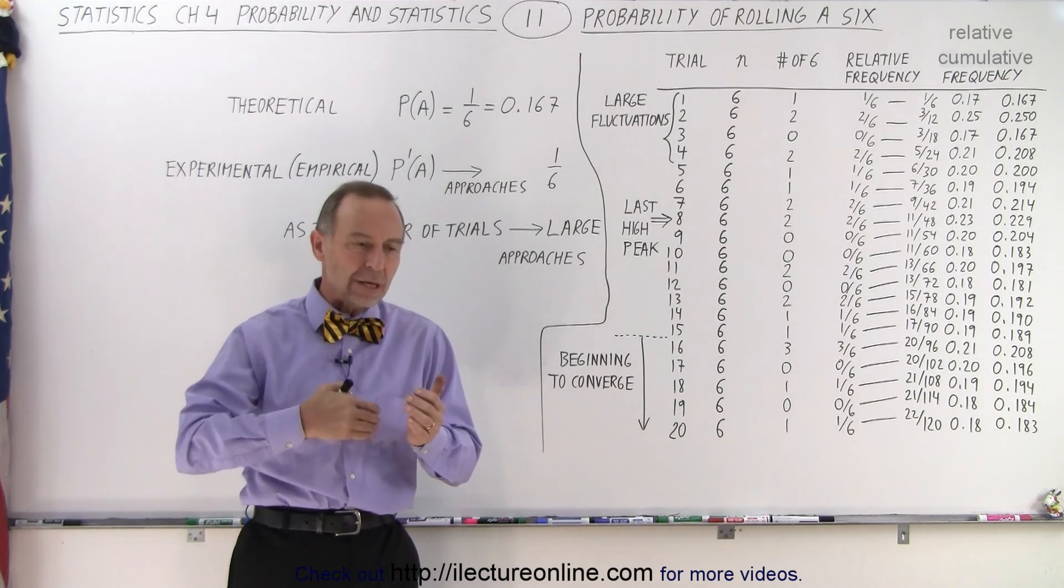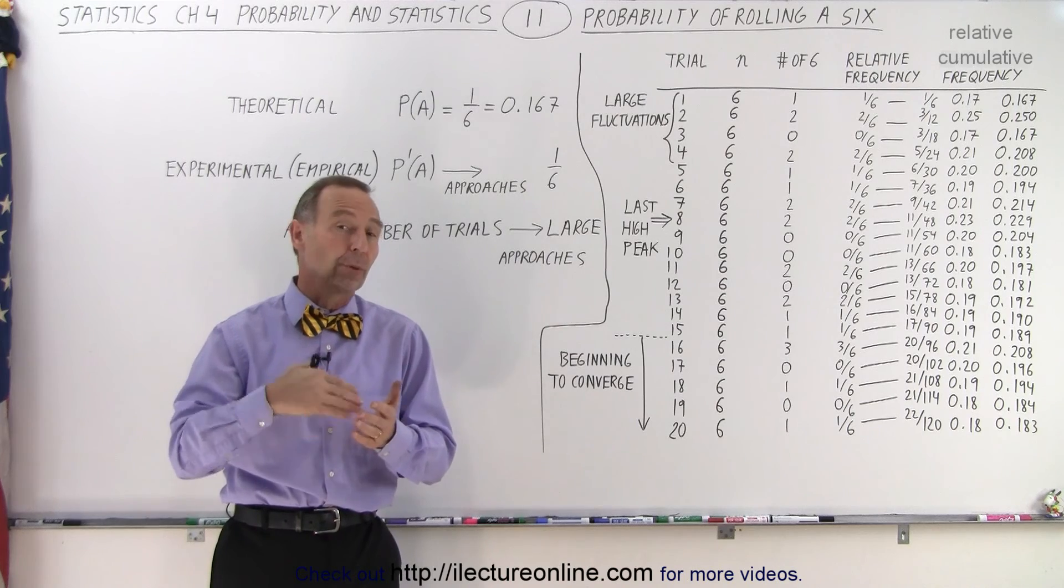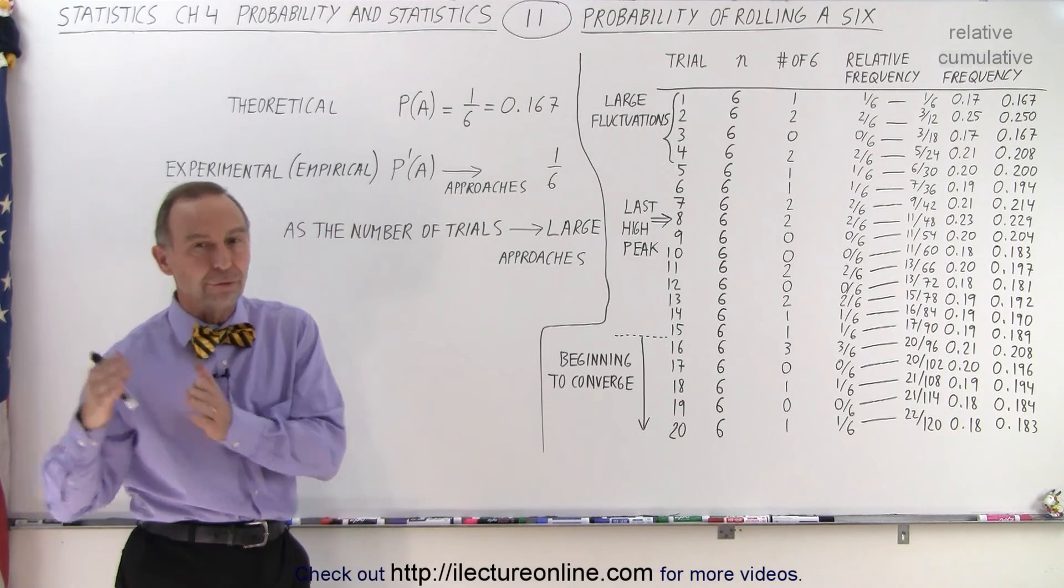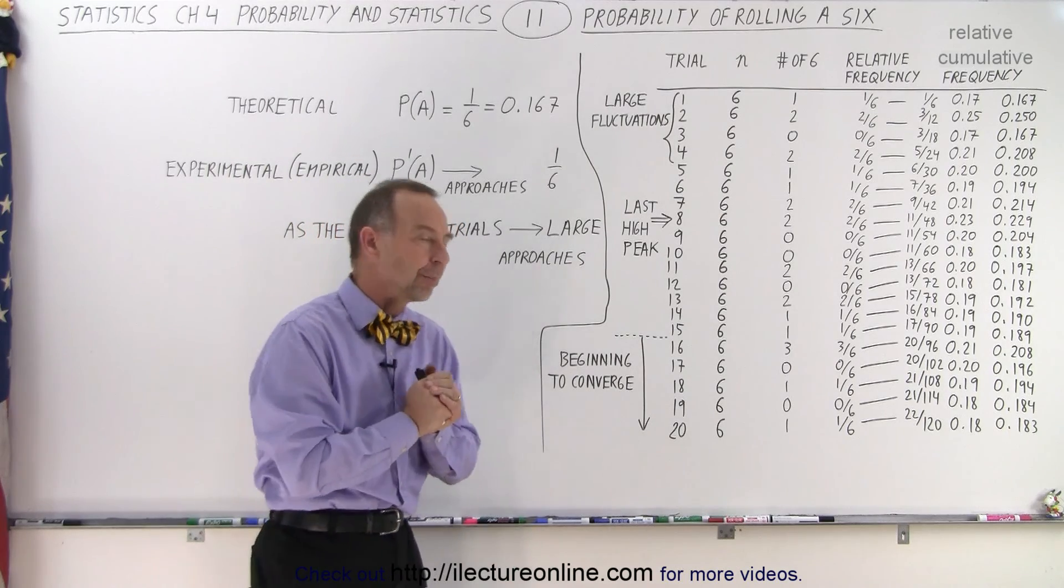We know that as we do more and more trials or more and more experiments, we expect the experimental probability to converge down to the theoretical probability.